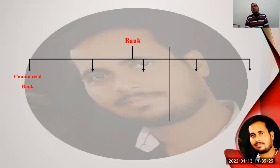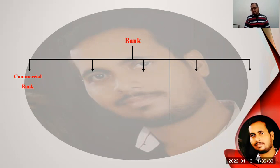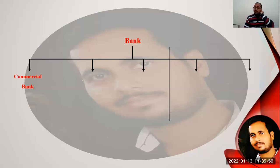The first type of bank is the commercial bank. Most of the banks which are known as banks, which perform the typical tasks of banks, are called commercial banks. We will discuss commercial banks in detail on the next slide in a specific lecture. The commercial bank is an institution which performs the function of accepting deposits and providing loans on the demands of customers.